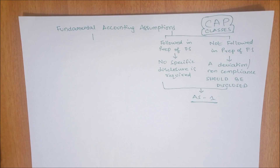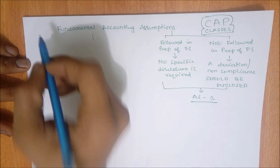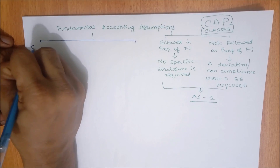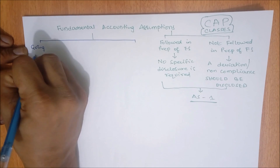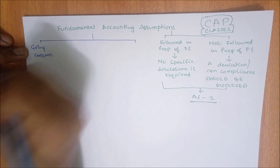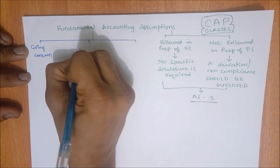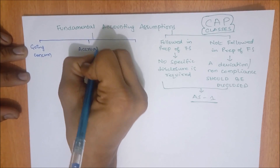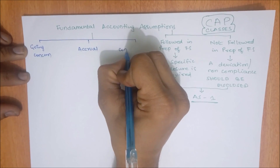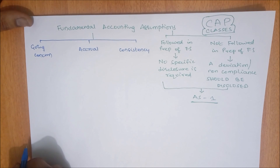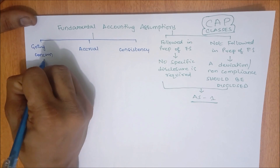Now the next question is: what are these fundamental accounting assumptions? I am pretty sure that majority of you remember these three. First one is going concern, second one is accrual, and third one is consistency.